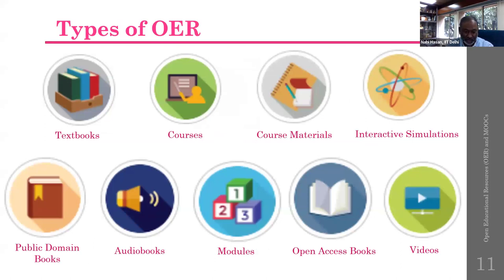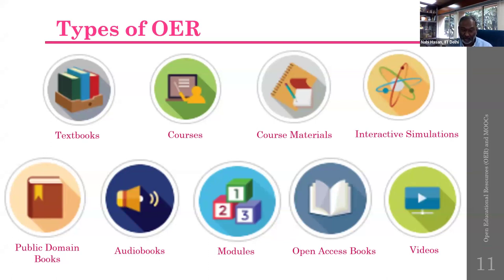We generally talk about OER and MOOCs but sometimes cannot identify the different types. We commonly know about courses, but there are different types of segregations. OER can be categorized as textbooks, courses, course material, interactive simulations, public domain books, audio books, modules for different purposes, open access books, and videos. There could be other types as well.